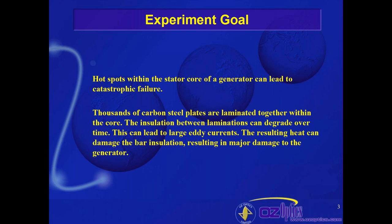Hot spots within the stator core of a generator can lead to catastrophic failure. As you can imagine, things get hot — that's bad. You often get things breaking down because of heat, things expand unevenly, and you can get short circuits if things start to degrade. Inside an electric generator, there are generally thousands of steel plates laminated together within the core. Within the core, these laminated plates have insulation surrounding them, and that insulation normally degrades over time. It's important that this be monitored because if it degrades too far, you get catastrophic failure.